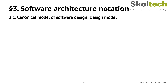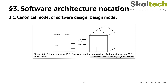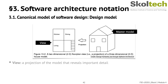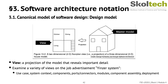Now let's get to the design model, which describes the design of the system. The design model is a comprehensive model with every possible detail — sometimes called a master model. In practice, what people typically use to describe their software architecture are views. A view is the projection of a model that reveals selected details. We will use views to selectively narrow our focus of the comprehensive design model, examining a variety of example views on the job advertisement system.